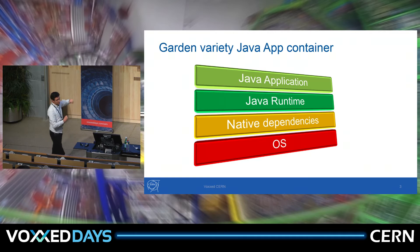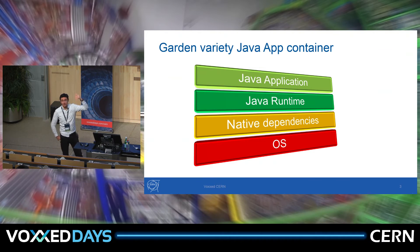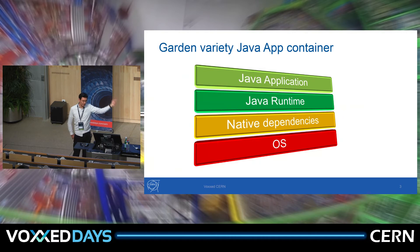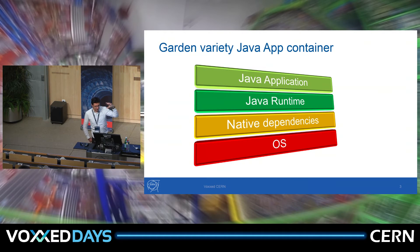At the bottom you'd find operating system dependencies. On top of that, a few native dependencies that are essential for any Java runtime to operate. Then you find a Java runtime — typically Oracle JRE, JDK, or OpenJDK. And on top of that, you're free to deploy your application. Now, all of this is very bare bones. We're not talking about advanced anything — you just need a Java runtime.